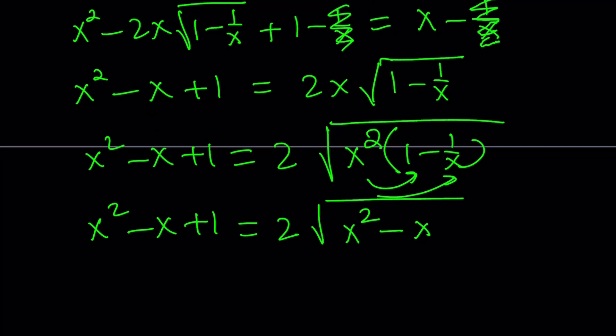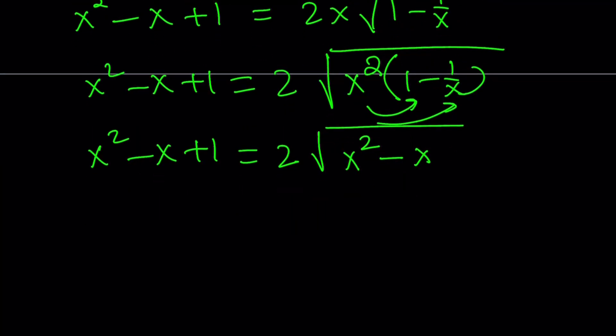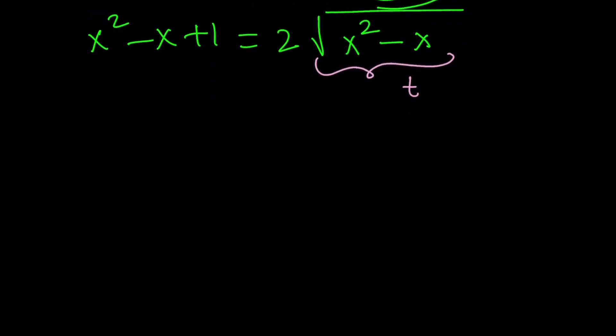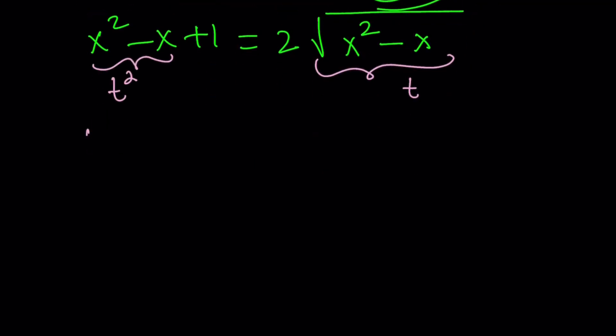This is the critical part of the solution. Because now we have the x squared minus x twice. Let's go ahead and use substitution. Let's go ahead and set this equal to something, I don't know, maybe t. And then this becomes t squared. So we get the following from here: t squared plus 1 equals 2t.